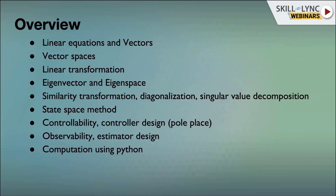As a general overview of a typical linear algebra coursework, one usually comes across topics such as linear equations and how we can obtain vectors from those equations, followed by vector spaces and then different linear transformations in the vector spaces — basically how we can change from one vector to another. Then it comes to eigenvectors and eigenspaces, which are a very crucial concept in linear algebra, implemented hugely in all applied fields, along with similarity transformation and diagonalization.